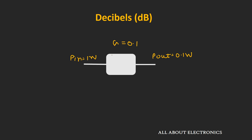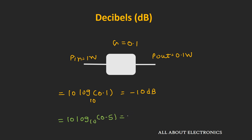Similarly, consider a system that provides attenuation. If you input 1 watt and get 0.1 watt at the output, the gain is 0.1, which in decibels is 10 log(0.1) = −10 dB. If the system provides a gain of 0.5, then in decibels it is 10 log(0.5) = −3 dB. So whenever the output is 0.5 times the input, the gain is −3 dB, or equivalently, the attenuation provided is 3 dB.